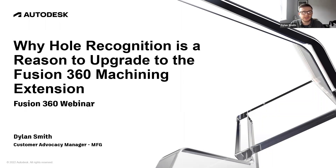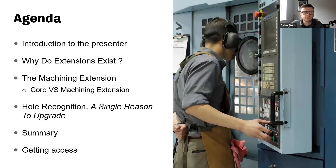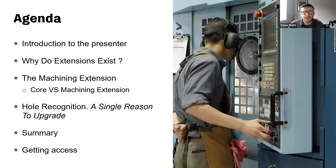Hi everyone, and welcome to this Fusion 360 webinar. Today we're going to be demonstrating why hole recognition is a reason to upgrade to the machining extension. So this is what the agenda looks like for this session. Firstly, we'll go over who I am and what I specialize in. Next, we'll look at why extensions exist at a high level. Then we'll look deeper into why the machining extension exists, and specifically the core offering versus the machining extension. After that, we'll go even deeper and look at hole recognition and why that alone is a single reason to upgrade to the machining extension. We'll then summarize everything, and finally look at how you can get access via a free trial.